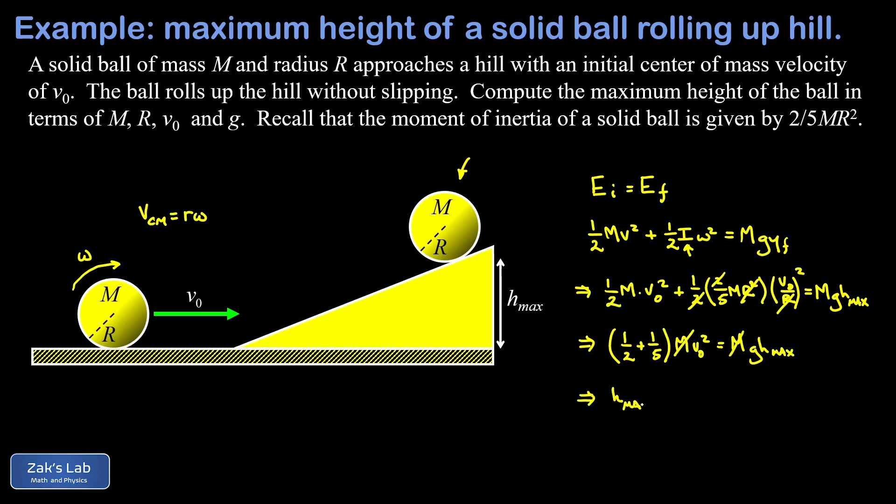So finally we're able to solve for h max in terms of all the given quantities. And in our previous step here we had a one half plus one fifth, well that's five tenths plus two tenths or seven tenths. So that gives me a seven v naught squared over ten, and then to isolate h max I had to divide by g, so that ends up in the denominator here.